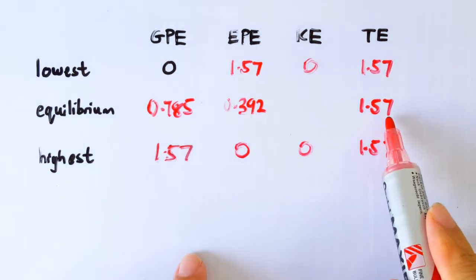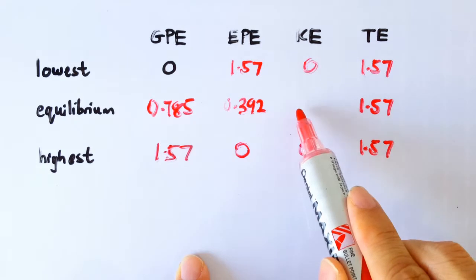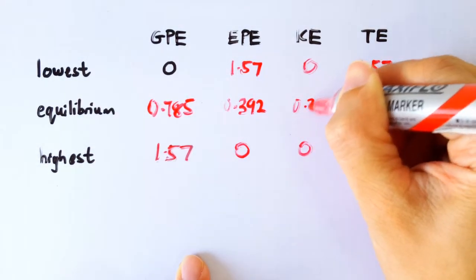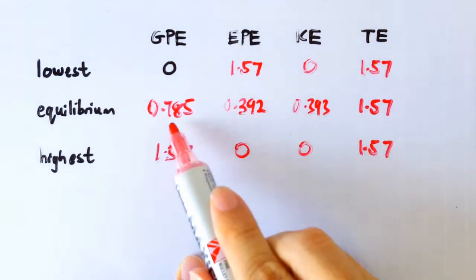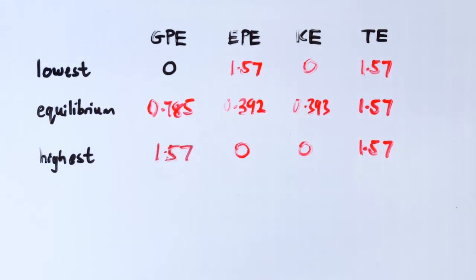Now that we know the total energy is 1.57, we can fill this box now because these three numbers must add up to 1.57. So using this fact, these three numbers must add up to this, I can fill in this number. And so I have completed the table. Ta-da!